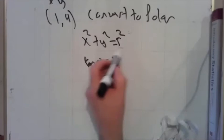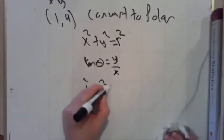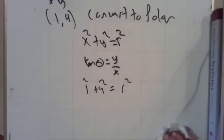Okay, so x squared plus y squared must be r squared. One squared plus four squared equals r squared, so one plus 16 is r squared. R then is the square root of 17.